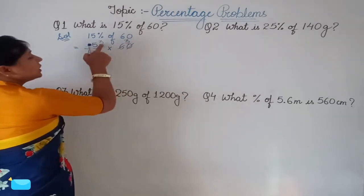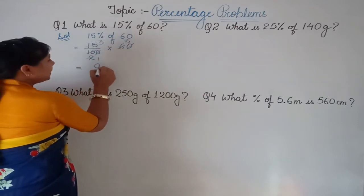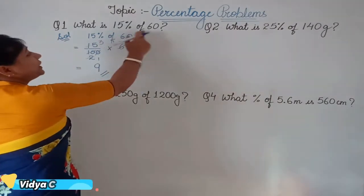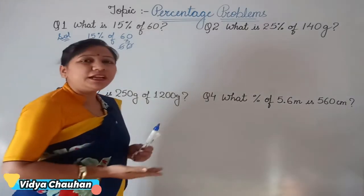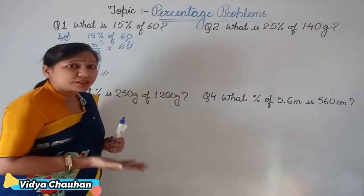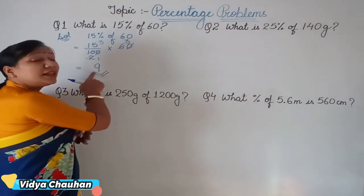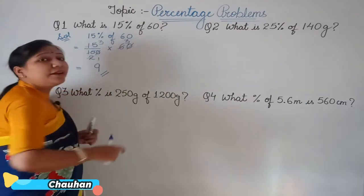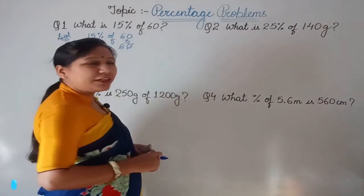After simplification we are left with 3 multiplied by 3, which equals 9. So 15 percent of 60 is 9. In that case, if you have 60 rupees and have to give 15 percent to your sister, you will give her 9 rupees, because 15 percent of 60 is 9.